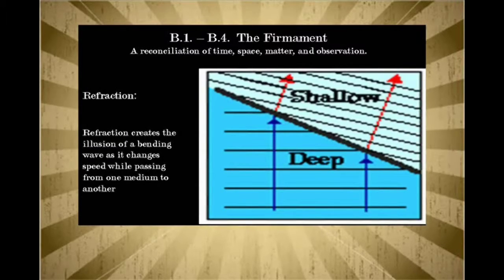Now also, refraction creates the illusion of a bending wave as it changes speed while passing from one medium to another, like you see in a pond. So as the water goes from the shallow or the top layers of water into the deeper water, it will bend, and you won't see the fish where the fish really are. They'll actually be somewhere else, but you'll see them differently than where they really are because of this bending of light.